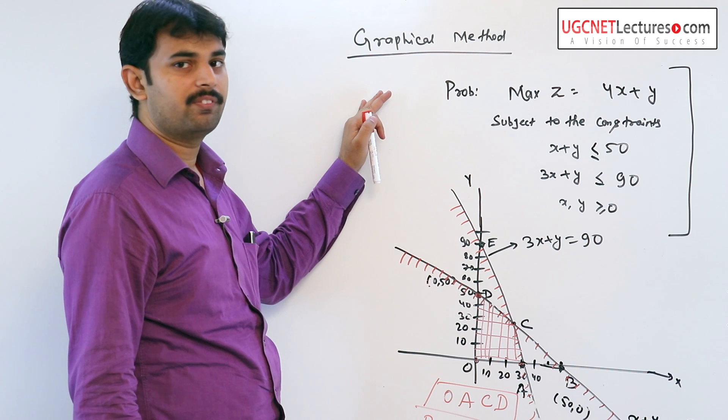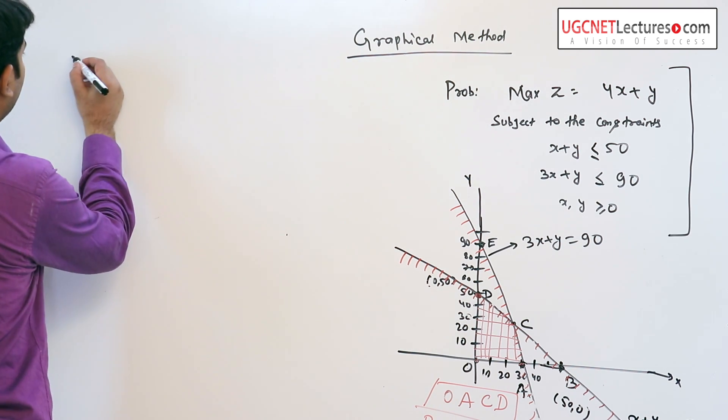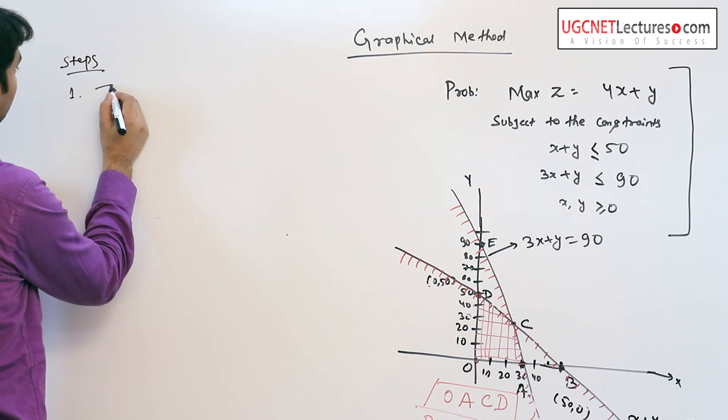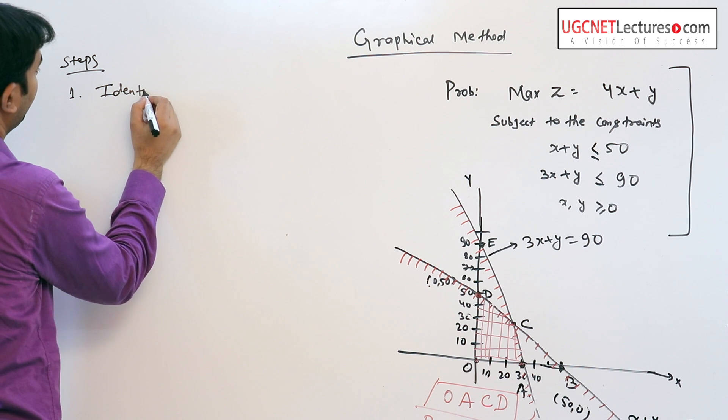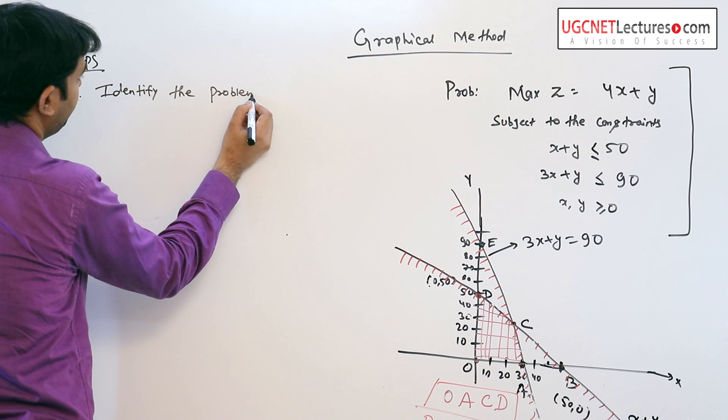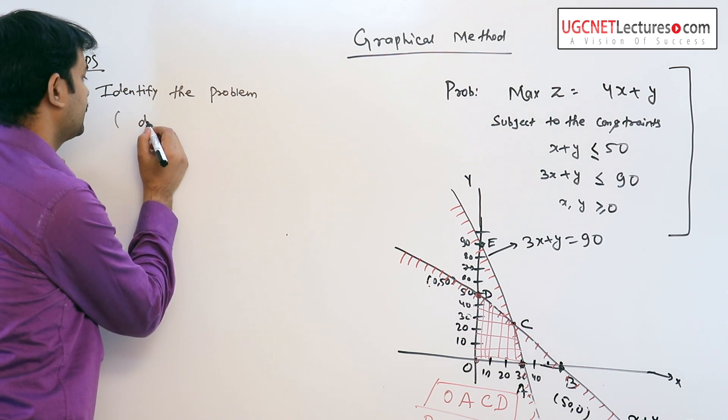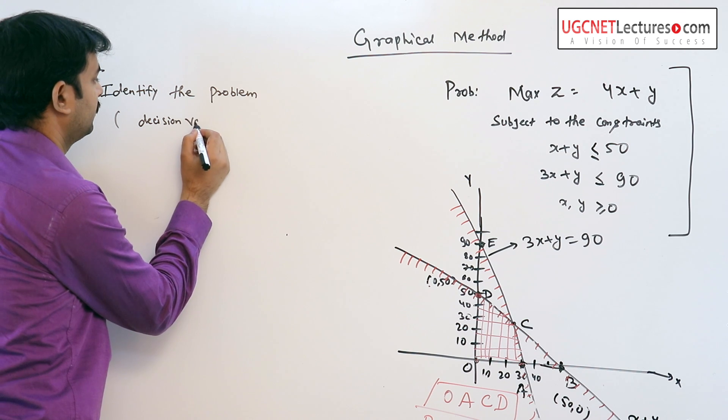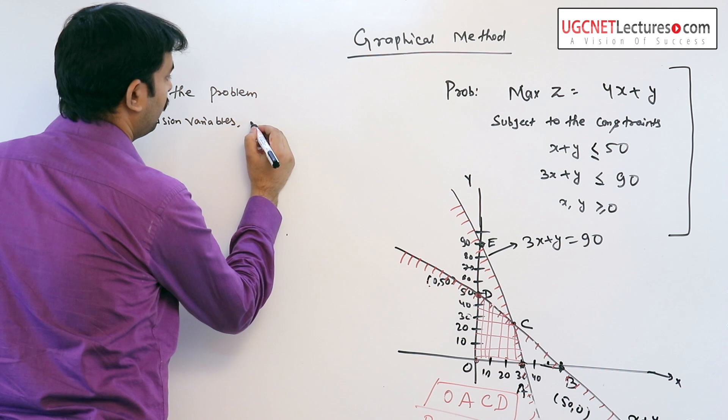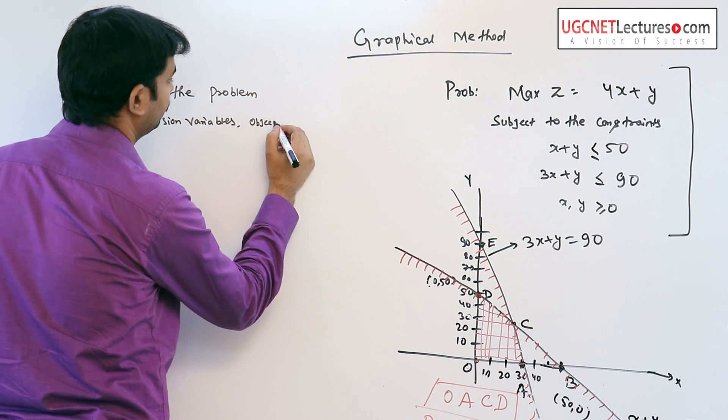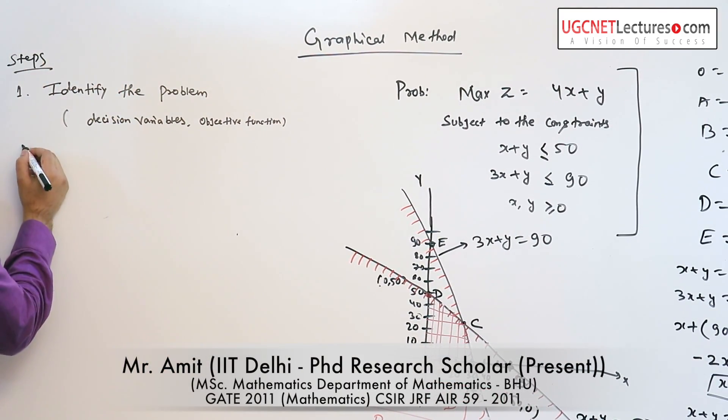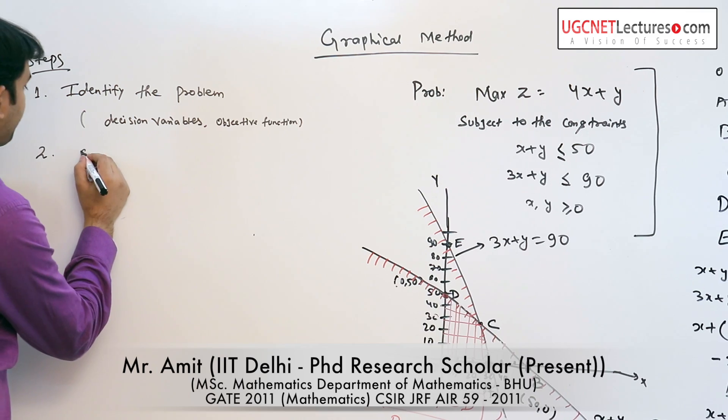The steps of the graphical method: first, identify the problem - what are the decision variables here, what are my decision variables, what is my objective function. Second, set up the mathematical formulation.